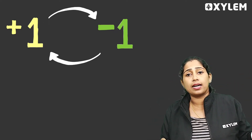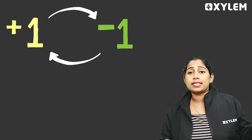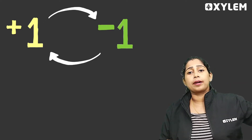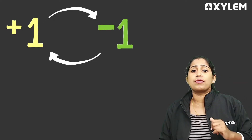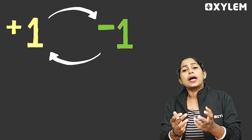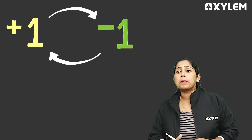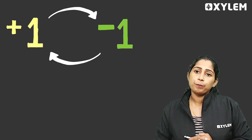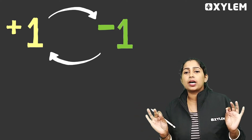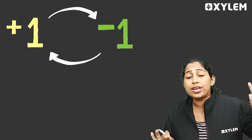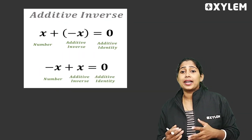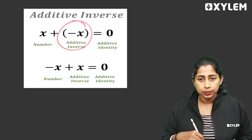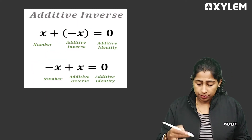Additive inverse. It is a minus 4. How do you think about the additive inverse? We are talking about a number. If you think about a sign and its opposite sign, we call it additive inverse. Here, x is the number — we call it additive inverse.